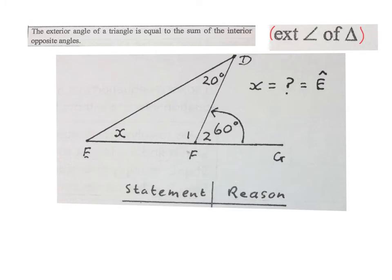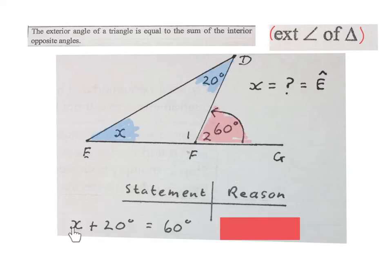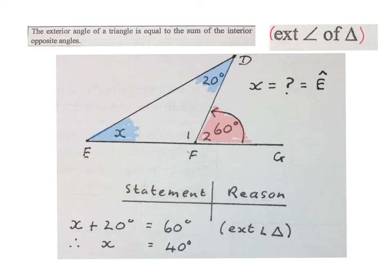It is good to write the word statement and reason. It will remind you to put statements and give reasons for your statements. You may write X plus 20 degrees equals 60 degrees, and your reason exterior angle triangle. Now we solve for X. We minus 20 on both sides.